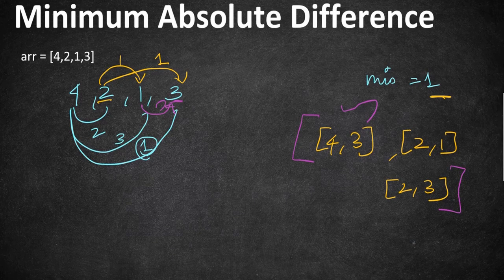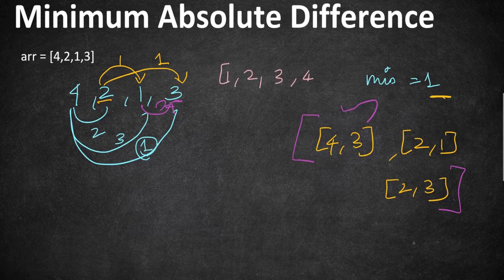How are we going to approach this programmatically? We have to find the minimum absolute difference first. Checking across all possible pairs in the given array is quite a tedious and slow process, so there is a quicker way to achieve it. The first step is to sort the given array. Once sorted, the difference between each adjacent element can be calculated and the minimum difference can be found.